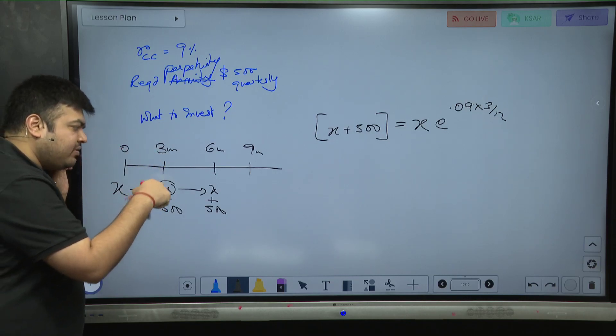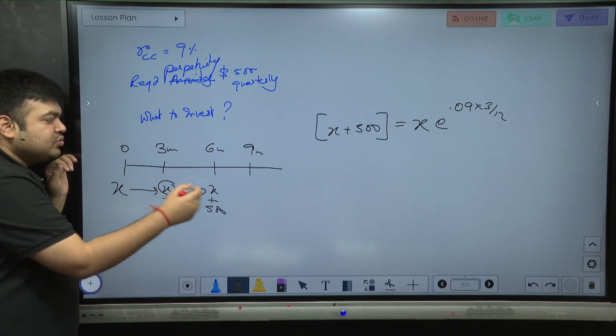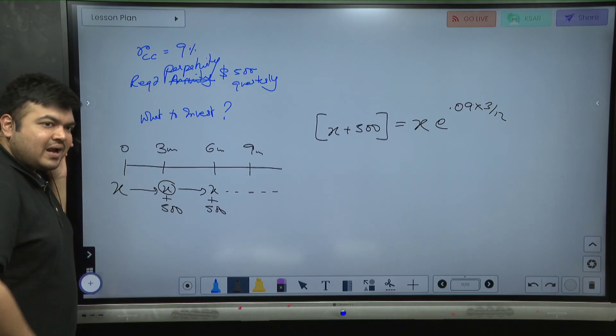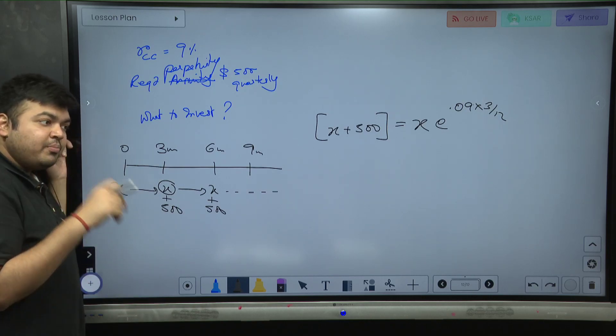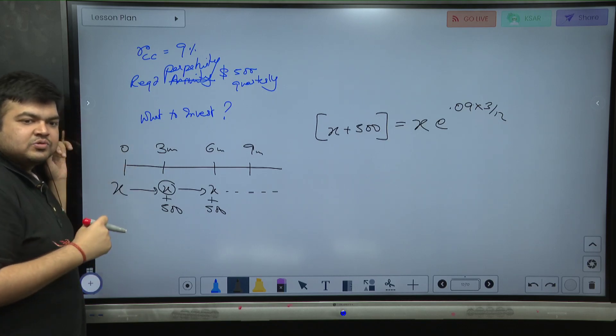That means the reinvested principal has to be the same. The interest for the three months period has to be 500. Only then the principal gets reinvested and again 500 interest is there, and this goes on forever. This is the idea. That's why I told you, if you mug up the formula of perpetuity, you'll get stuck in this question. If you apply common sense, you'll be able to solve it.